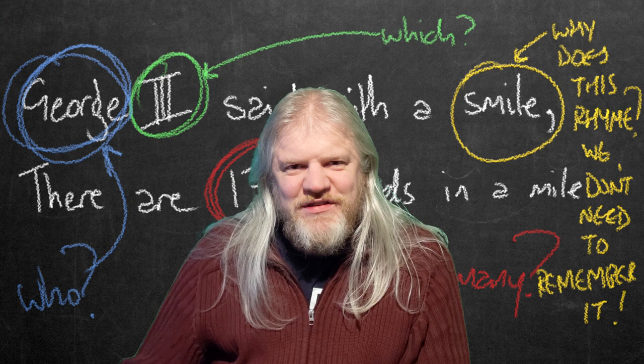There's nothing in the structure of the mnemonic that makes 1760 the correct number. It doesn't rhyme with anything, it doesn't particularly fit a meter. You could perfectly well say George III said with a smile, there are four and a half yards in a mile. It still fits. Anyway, I'm getting sidetracked and cross about this bad mnemonic and it doesn't matter.